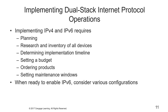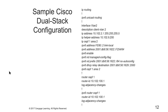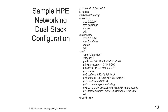Once the network devices are ready to have v6 enabled, it's time to consider the various configurations. Here's a sample Cisco dual stack configuration, and here's one for HP Enterprise networking dual stack config.